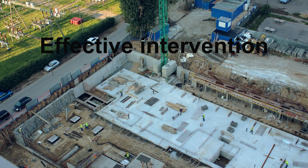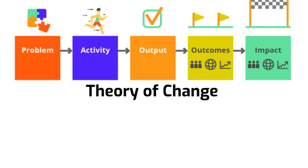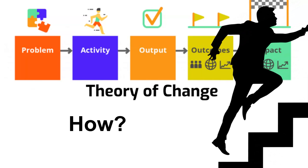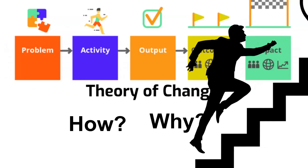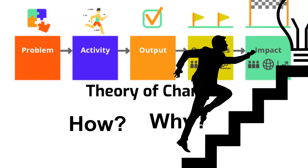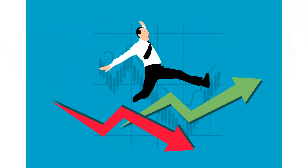A theory of change is about asking critical questions like how and why. How will our actions lead to desired outcomes? What steps are necessary to get there? Why do we believe these actions will be effective, and what evidence supports our approach? By answering these questions, we gain clarity and confidence in our strategy. We can then design projects with a higher chance of success, ensuring that our efforts lead to meaningful and lasting change.